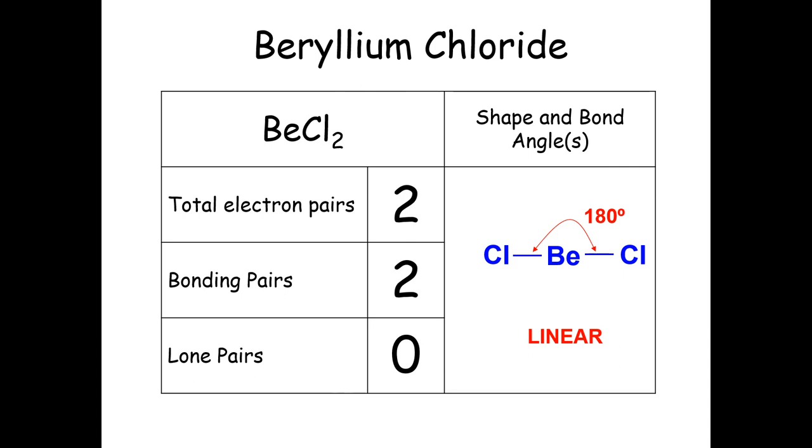So with two pairs of electrons, two bonding pairs and no lone pairs, we get a linear shape. Anything that has just two pairs of electrons is going to form this linear type shape.